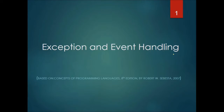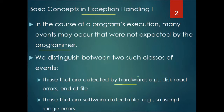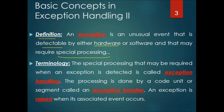Let us talk about exception and event handling. In the course of program execution, many events may occur that were not expected by the programmer. Exceptions are events not expected by the programmer or even by the system in which the program is running. We distinguish between two classes: those detected by hardware, such as device errors and end-of-file, and those that are software-detectable, such as subscript range errors and division by zero. An exception is an unusual event detectable by either hardware or software that may require special processing to handle.